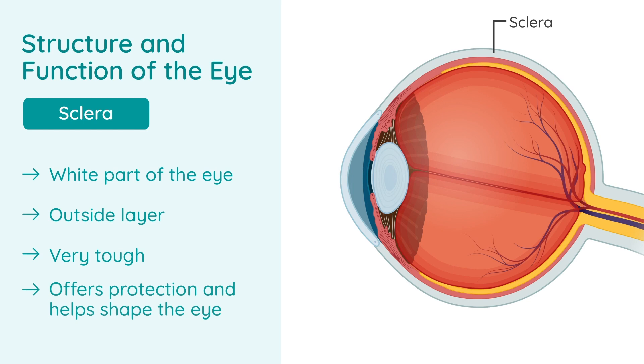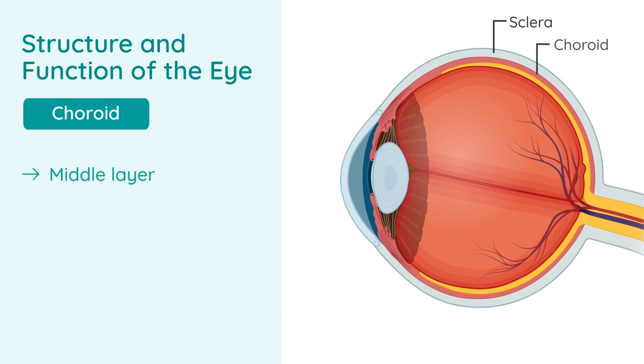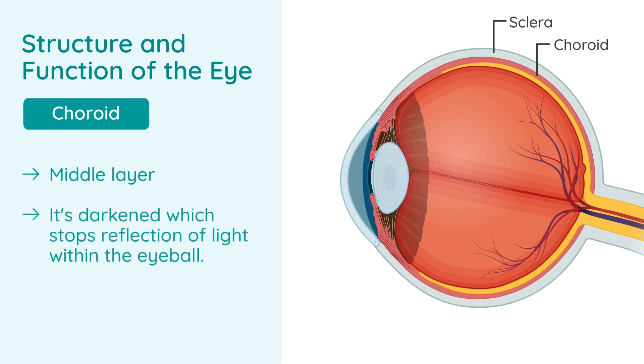The middle layer is the choroid, and what it does is it's darkened, which stops reflection of light within the eyeball.